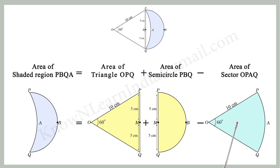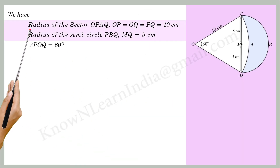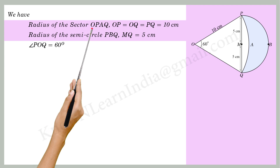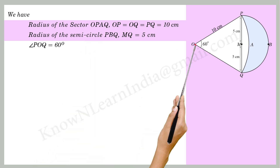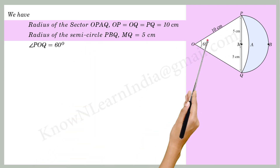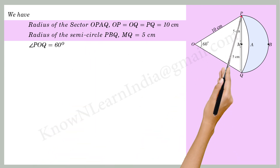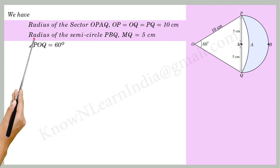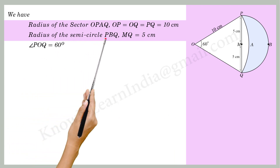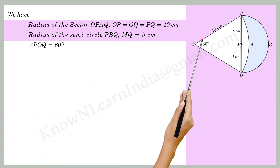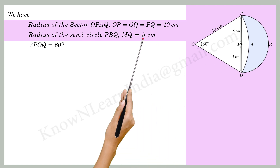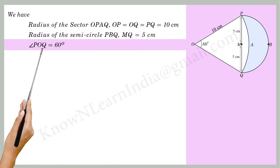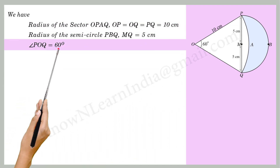Now let's move to the calculations. We have the radius of sector Opaq: Op is equal to Oq is equal to PQ is equal to 10cm. The radius of semi-circle Pbq: Mq is equal to 5cm. And angle POQ is equal to 60 degrees.